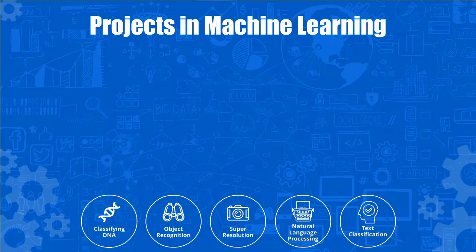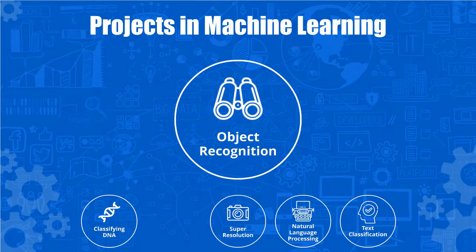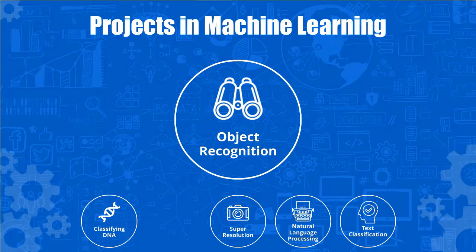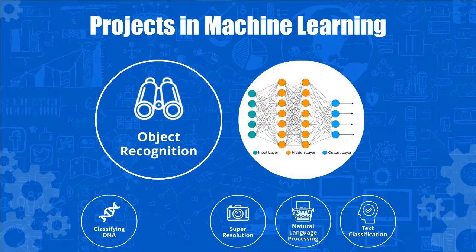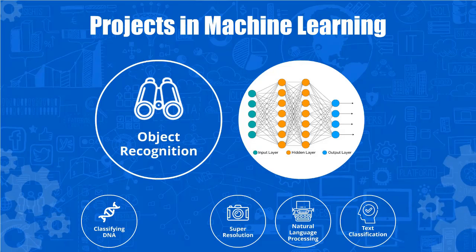Our second project is going to be obtaining near state-of-the-art performance on 10 object recognition tasks using deep learning. Using the CIFAR-10 object recognition dataset as a benchmark, we will implement a recently published deep neural network that can obtain similar results to state-of-the-art networks despite having fewer parameters and smaller computational requirements.